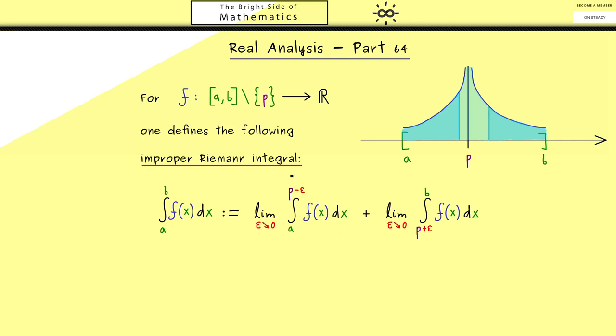So you see what we really need is that the one area is finite and the other one. In other words, both limits have to exist such that the improper Riemann integral here makes sense.